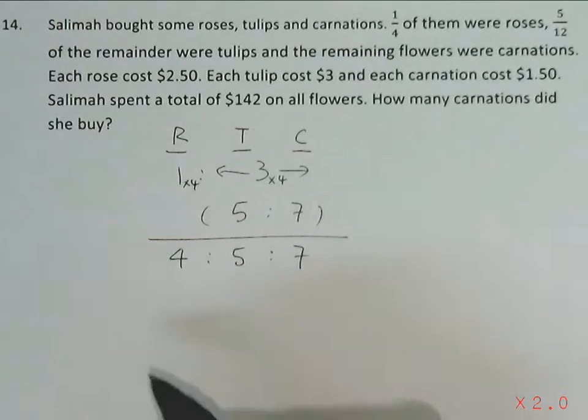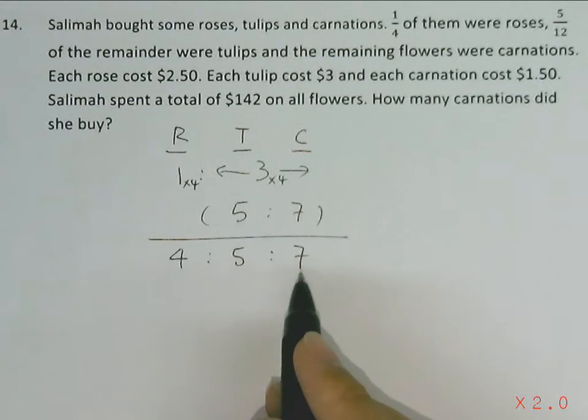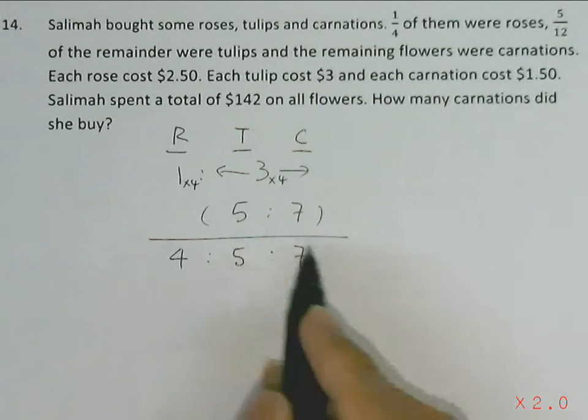So from here, we know that she had 4 units of roses, 5 units of tulips, and 7 units of carnations. This is the number of flowers.